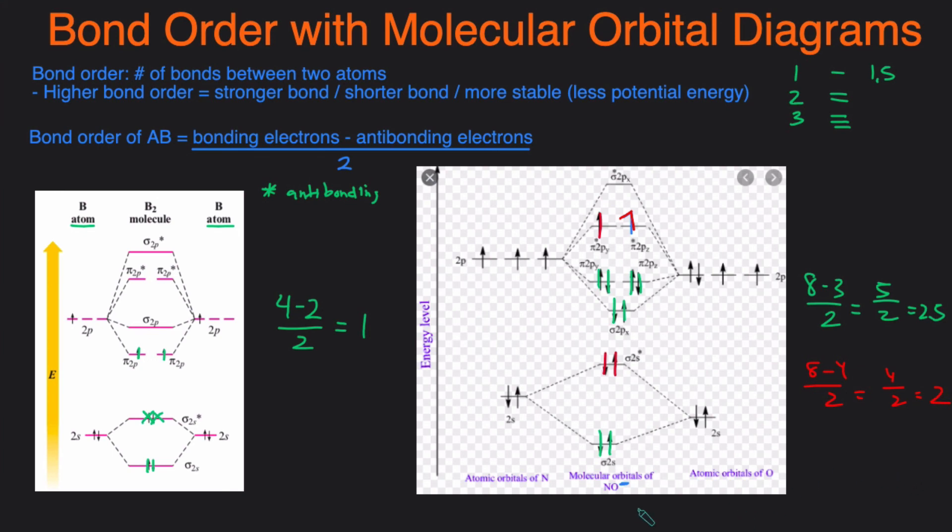So that means by having that extra electron the bond order went down. Meaning the NO minus is less stable than NO. Because this one had a bond order of two and it had a bond order of 2.5. And then we talked about how higher bond order means it's more stable. So then this one is going to be more stable than that one.